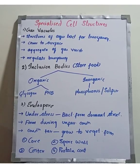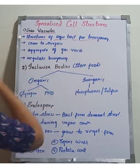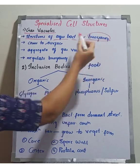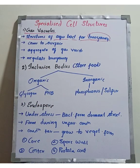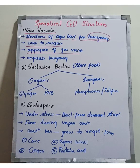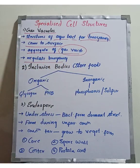Special structures include gas vacuoles. Gas vacuoles are structures found in aquatic bacteria for buoyancy. In aquatic forms, these structures allow bacteria to float in water. Gas vacuoles are aggregates of gas vesicles combined together.